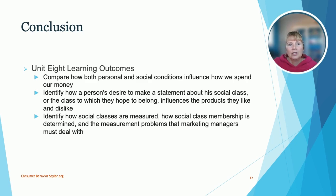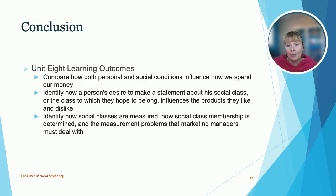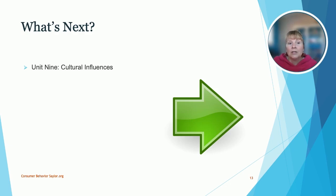In conclusion, here are the Unit 8 learning outcomes: compare how both personal and social conditions influence how we spend our money; identify how a person's desire to make a statement about their social class or the class they hope to belong to influences the products they like or dislike; and how social classes are measured, how social class membership is determined, and the measurement problems marketing managers have to deal with. Unit 9 is on cultural influences. My name is Dr. Marci Stone — thanks for listening.